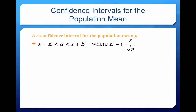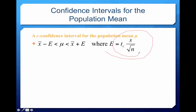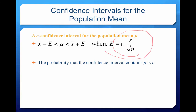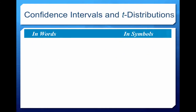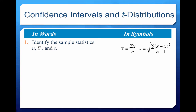A confidence interval for the population mean mu is going to look exactly like what we did before. The only difference is going to be how we're calculating our error. We will not be using the hand formula — we'll be using a function in Excel. The probability that the confidence interval contains mu is c.